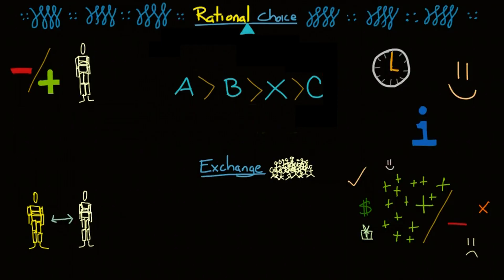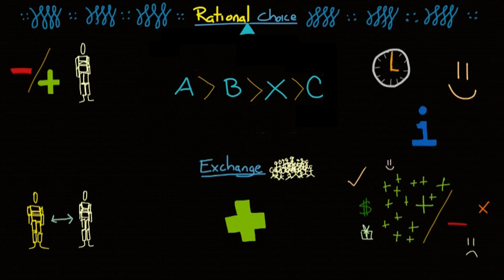There are quite a few assumptions that exchange theory depends on. Let's see if I can get through these quickly and clearly. First off, people seek to rationally maximize their profits, which means they seek rewards and avoid punishments. So, like when you were a kid, you behaved yourself so you could get a cookie after dinner, instead of being sent to your room.